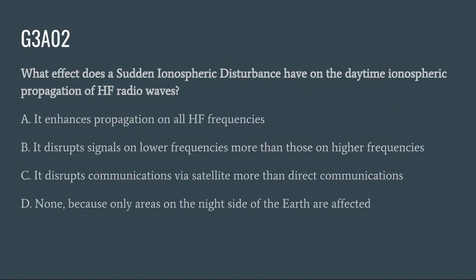G3A02: What effect does a sudden ionospheric disturbance have on daytime ionospheric propagation of HF radio waves? A. It enhances propagation on all HF frequencies. B. It disrupts signals on lower frequencies more than those on higher frequencies. C. It disrupts communications via satellite more than direct communications. Or D. None, because only areas on the night side of the earth are affected. The correct answer is B: it disrupts signals on lower frequencies more than those on higher frequencies.